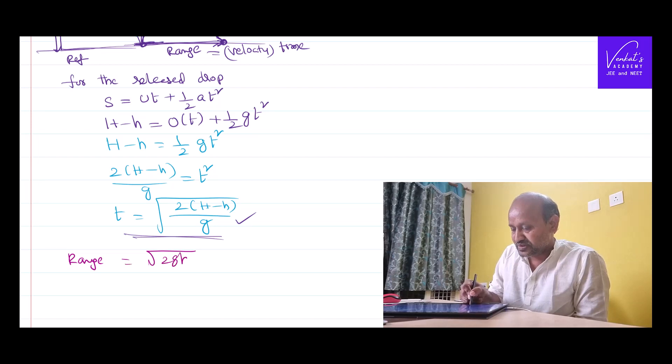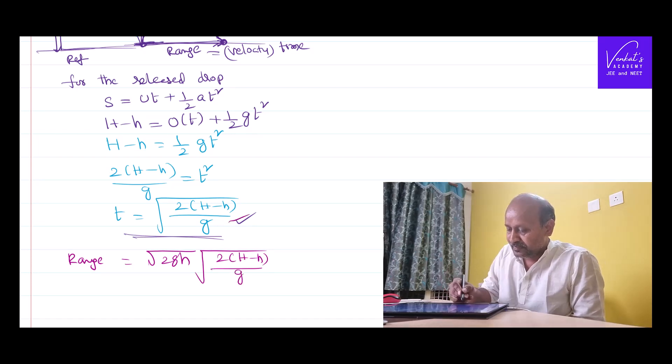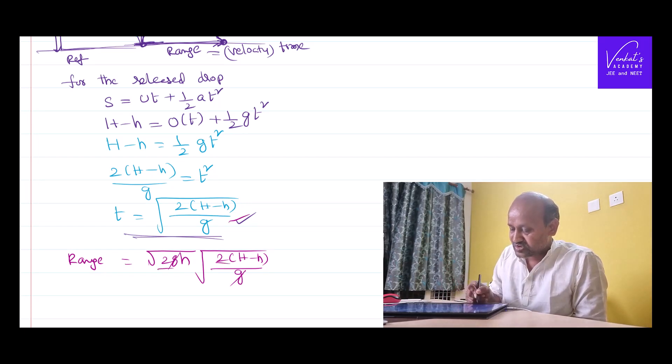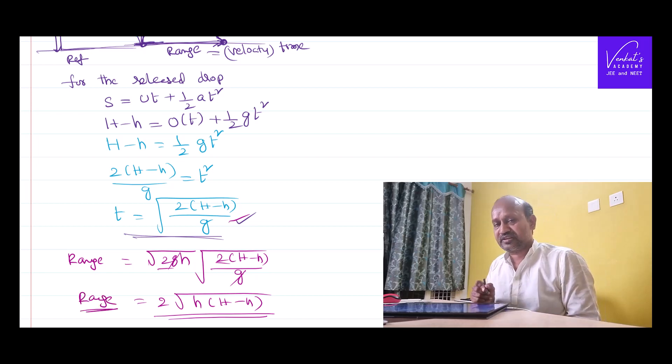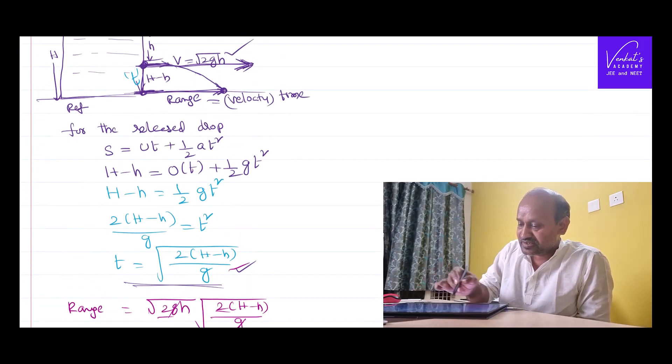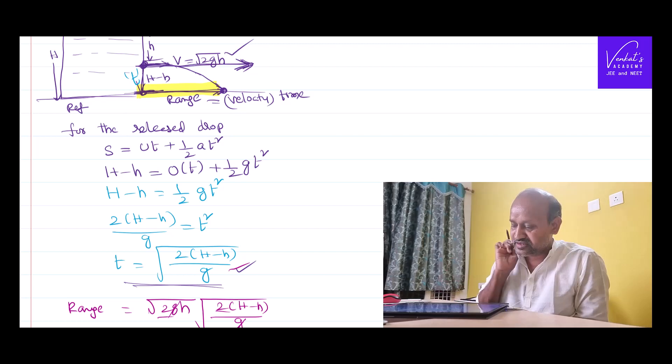V is root 2gh. T is the value we found. This G and this G can be cancelled. The 2 and 2 in the square root - 2 will come out. The remaining is under the square root itself: H(H minus h). This is the range of the drop that came out with the velocity of efflux. What we have found is this range.